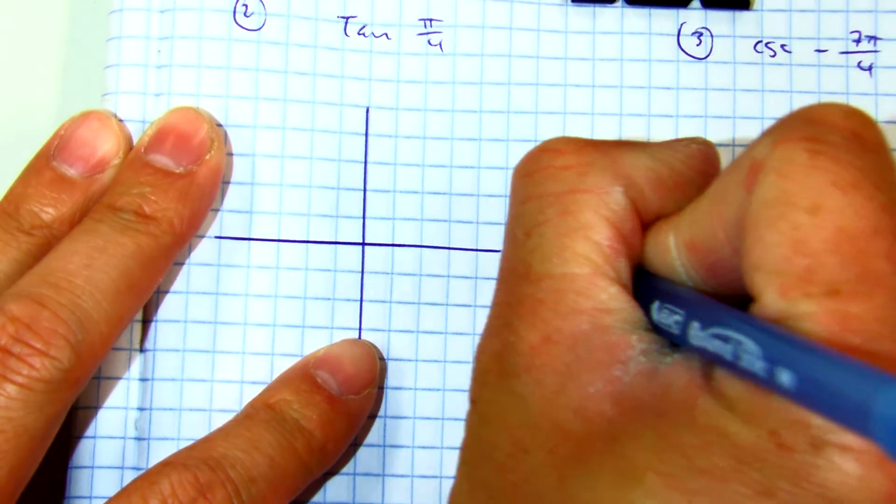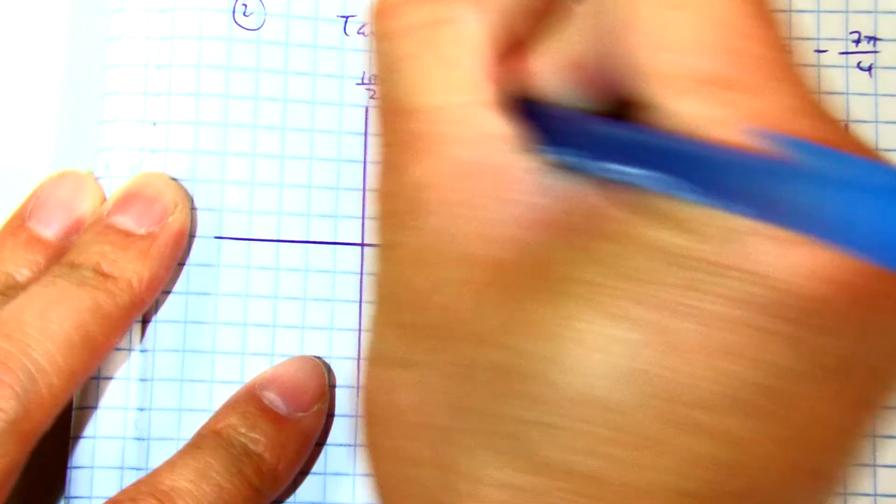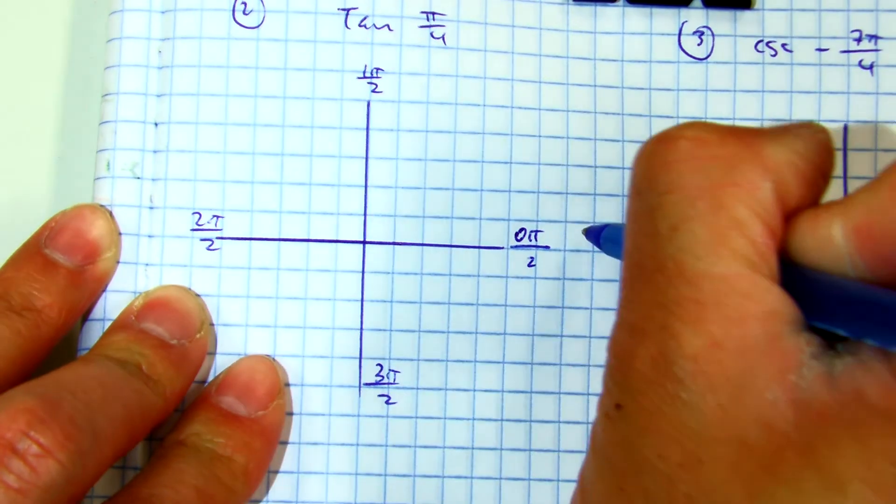We've been using this technique of 0 pi over 2, 1 pi over 2, 2 pi over 2, 3 pi over 2, 4 pi over 2.